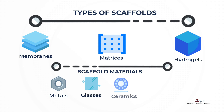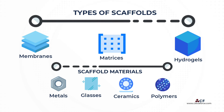Metals, glasses, and ceramics can all be utilized as scaffolds, but polymers, whether synthetic or natural, are preferred because they are easier to regulate in terms of chemical and structural surface qualities. It is of note that tissue engineering scaffolds differ from those used in 3D cell cultures in that they have unique properties such as biodegradability and support for tissue regeneration applications.